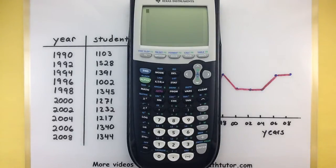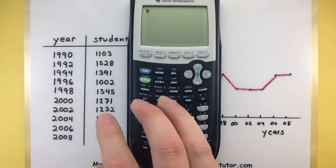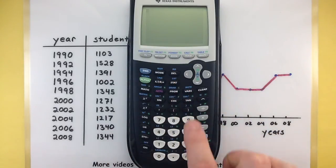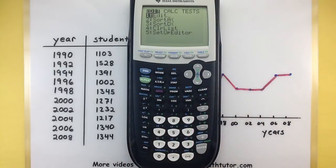The very first thing we need to do is take all of our data over here and put it into the calculator. To do that look for your stat button that's right underneath the delete key and you'll notice that the first option says edit so go ahead and press enter.